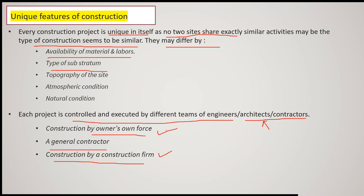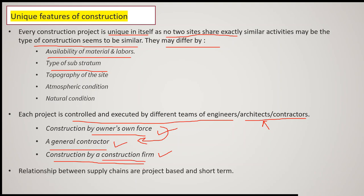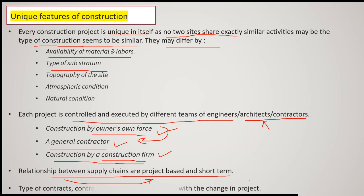For example, a two-story residential house can be given to a general contractor, but if there is a colony where multiple houses need to be built, you can give that project to a construction firm. The relationship between supply chain members is project-based and short-term — who supplies material, manpower, or skilled workers will differ from one project to another. Contract terms also generally change with the change in projects.